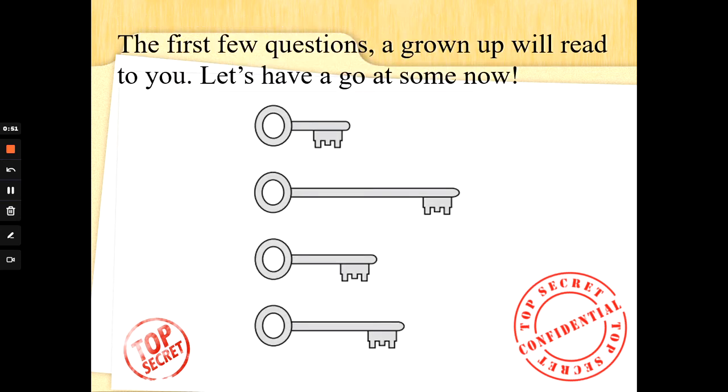The first few questions a grown up will read to you. You can see there's no question written down here so let's have a go at some of these together. Circle the longest key. Now we know this word in a special agent task, it just means put a circle around it. Can you find the longest key? There it is. That's all you need to do to get that point. Well done.